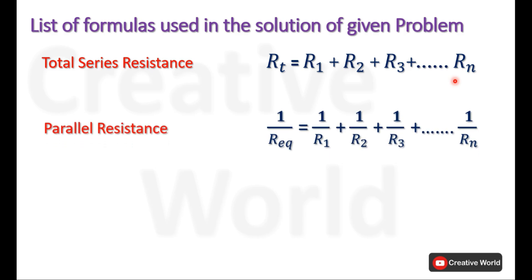We will also be using the equivalent parallel resistance calculation formula. The generalized formula for total parallel resistance is: 1 divided by R equivalent equals 1 divided by R1, plus 1 divided by R2, plus 1 divided by R3, and so on up to 1 divided by Rn. R1 to Rn are the resistances connected in parallel.